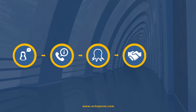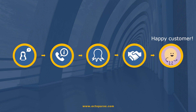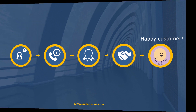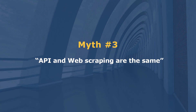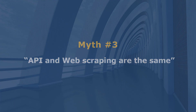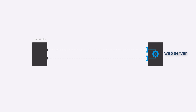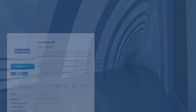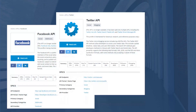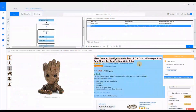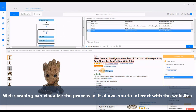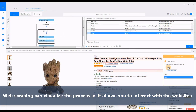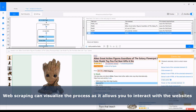Octoparse is a responsible web scraping service provider that places client satisfaction first. Myth number 3: API and web scraping are the same. API is like a channel through which you can send your data request to a web server and get desired data. API will return data in JSON format over the HTTP protocol — for example, there are Facebook API, Twitter API, and Instagram API. However, it doesn't mean you can get any data you ask for. Web scraping can visualize the process as it allows you to interact with the websites.